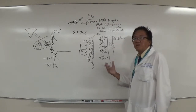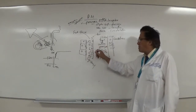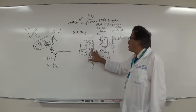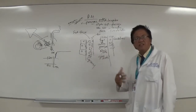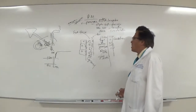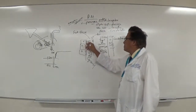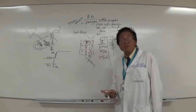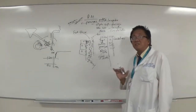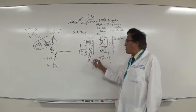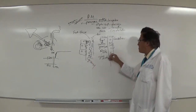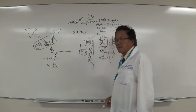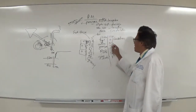Type 2 is non-insulin dependent (NIDDM) because the beta cells still produce some insulin — just not enough. Using the key analogy: instead of needing nine keys, they only have one to three keys. So glucose still enters, but slowly, and remaining glucose stays in the blood causing hyperglycemia. Little insulin is still better than zero.